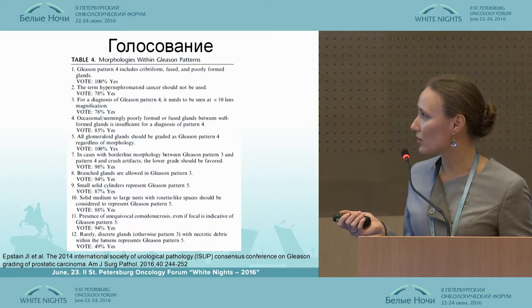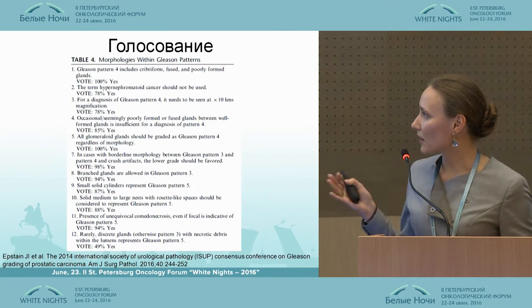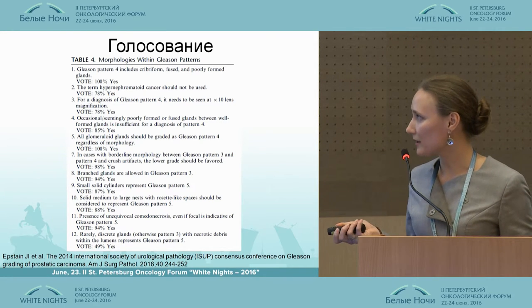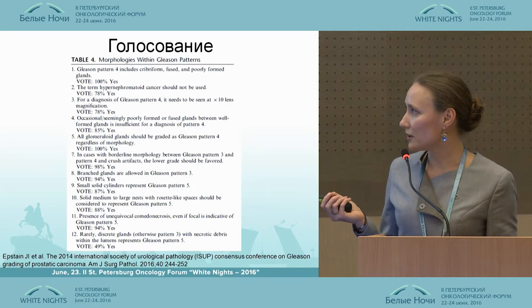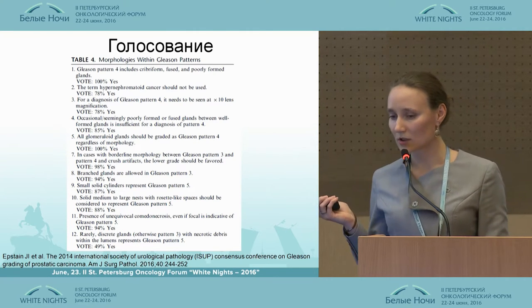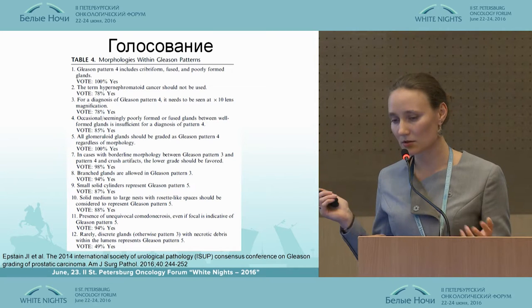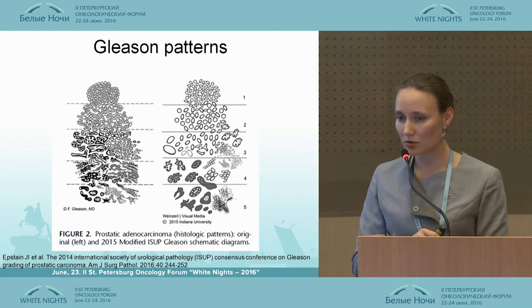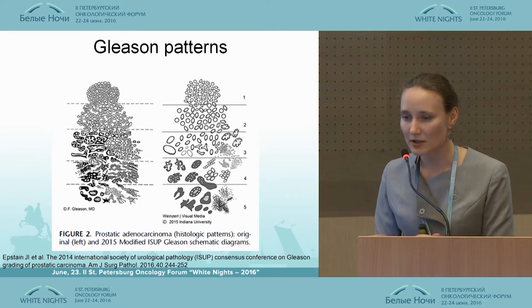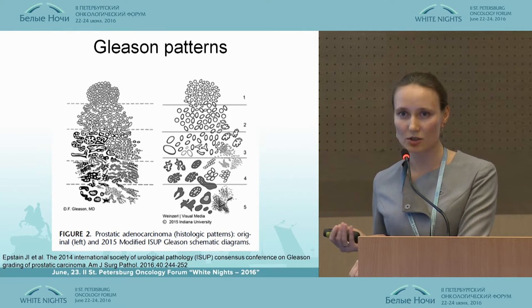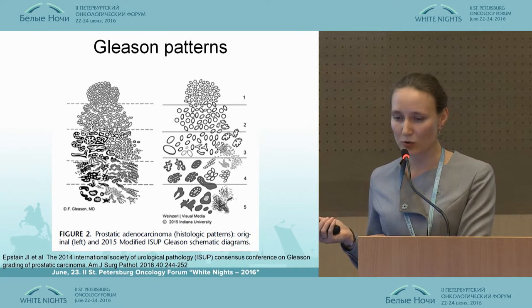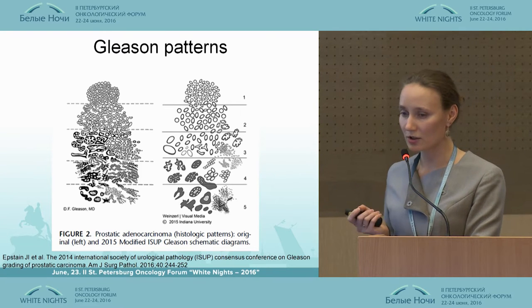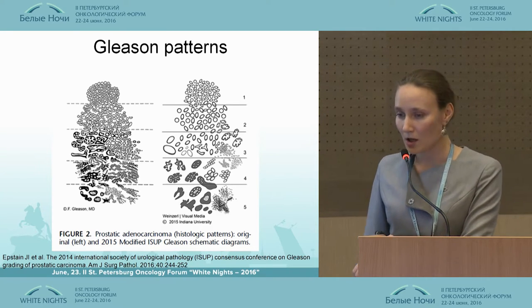The only question still in doubt: rarely discrete glands — otherwise pattern 3 — with necrotic debris within the lumens representing Gleason pattern 5, which scores 0.12, are not included in the present classification. You can see how these Gleason patterns were changed in comparison to the original, up to the classification of 2016.